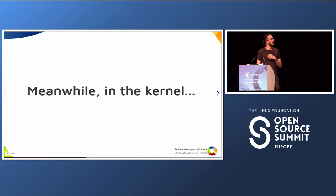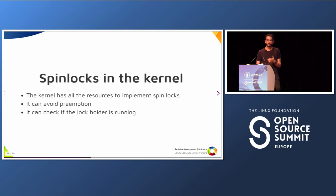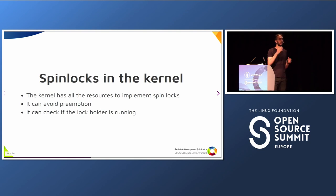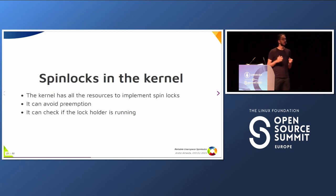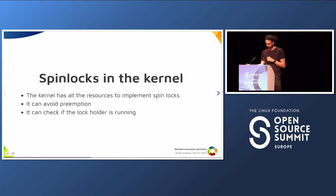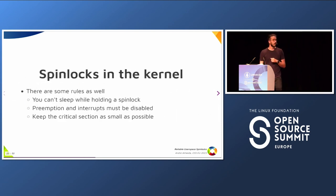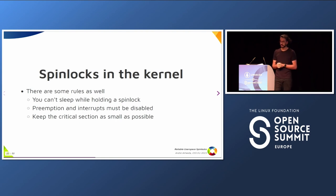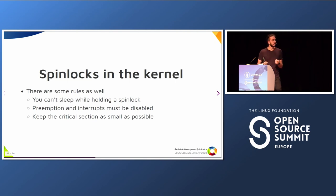In the kernel, we can implement locking mechanisms in a totally different way, because in the kernel we have all the resources in our hands. We know exactly which threads are running, which threads are sleeping, and on which CPU they are running. We can disable preemption, so we can make sure the thread will run for the whole critical section. And we can check if the lock holder is running or not. For spin locks in the kernel there are rules: you can't sleep while holding a spin lock, you need to disable preemption and interrupts, and you need to keep the critical section as small as possible.